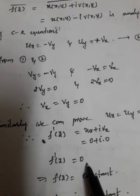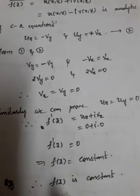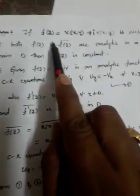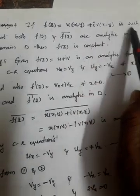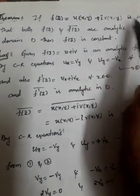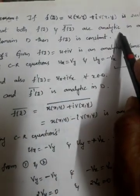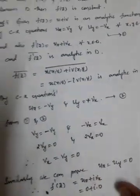Since f'(z) = 0, integrating both sides gives f(z) = constant. Therefore f(z) is constant. What we have proved is: if f(z) = u(x,y) + iv(x,y) is such that both f(z) and f(z̄) are analytic in D, then f(z) is constant. This is a small theorem they may give for four marks.